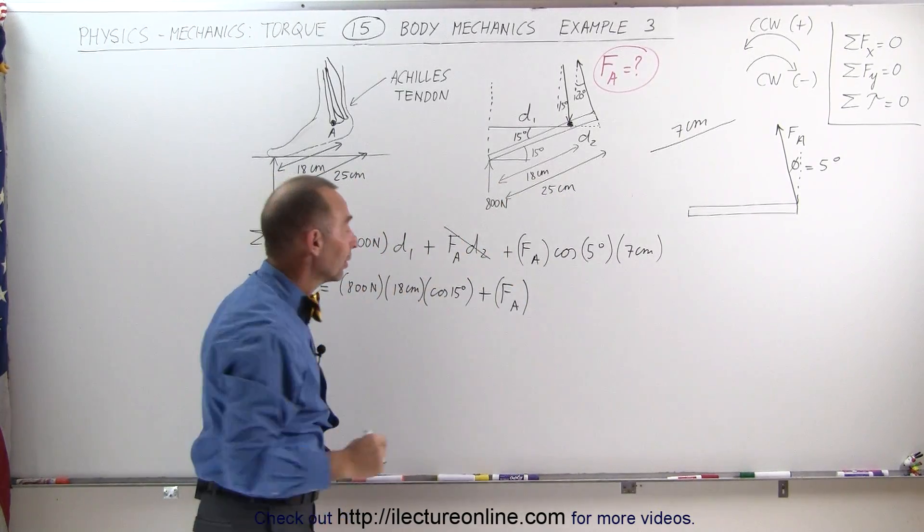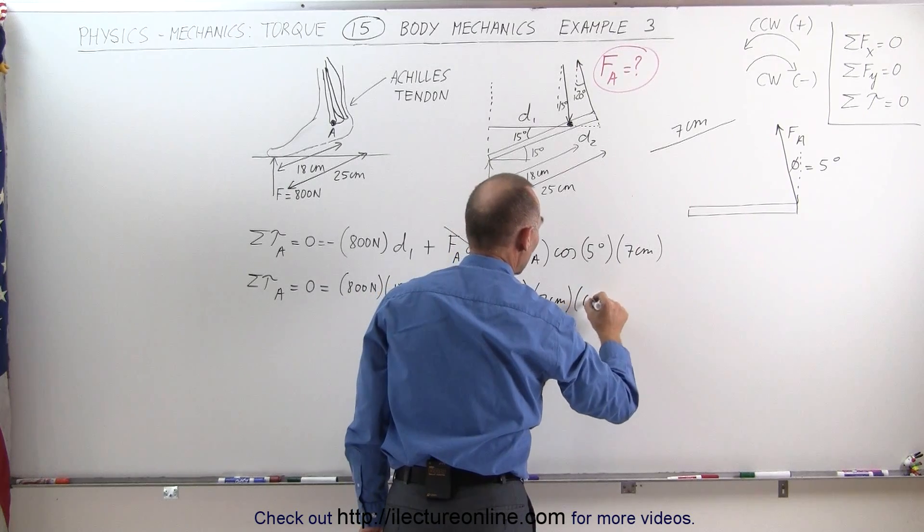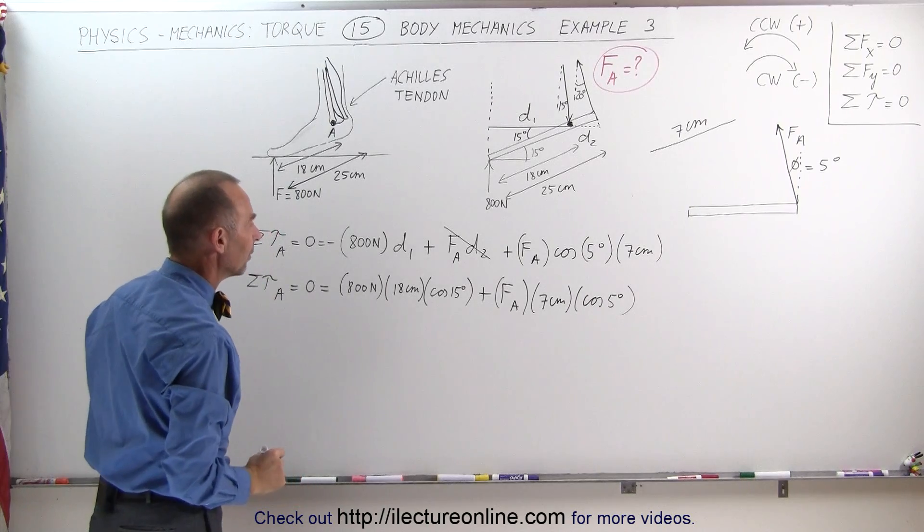Now we're ready to plug all that in so FA times 7 centimeters times the cosine of 5 degrees. So that method works better for that part of the problem.